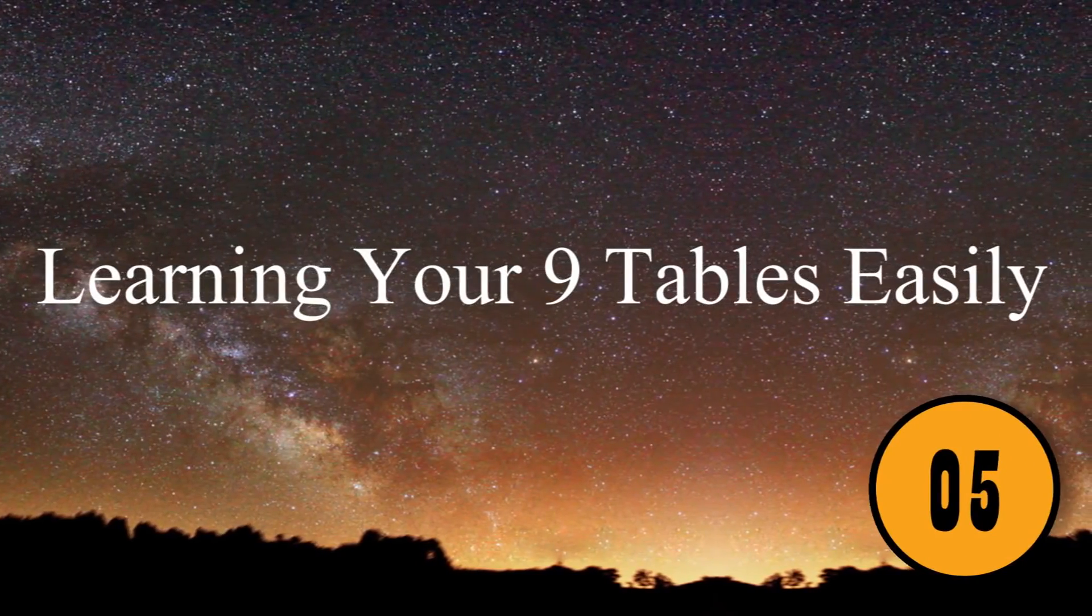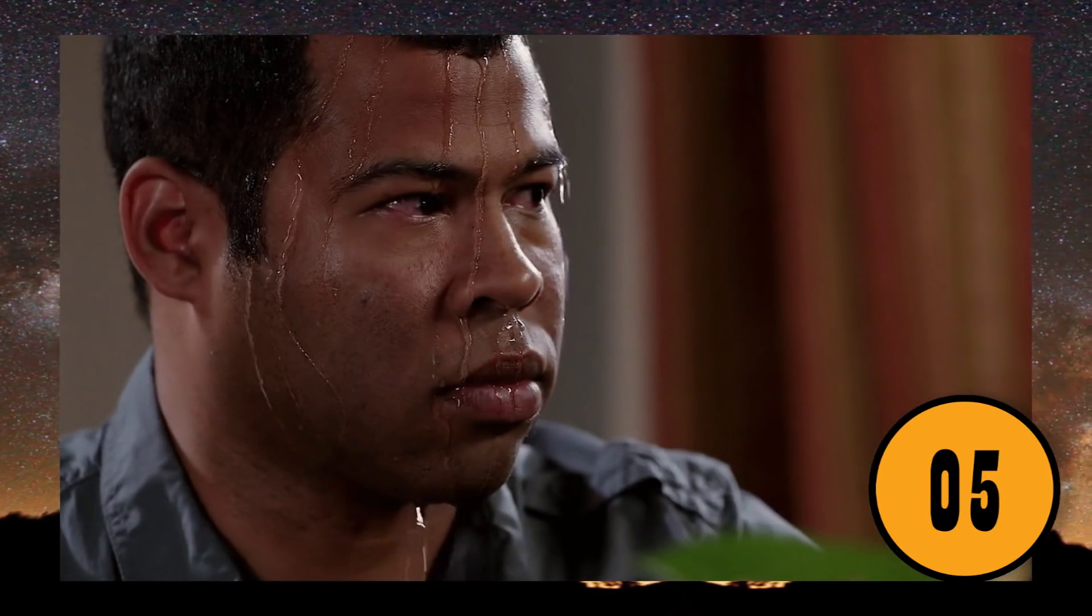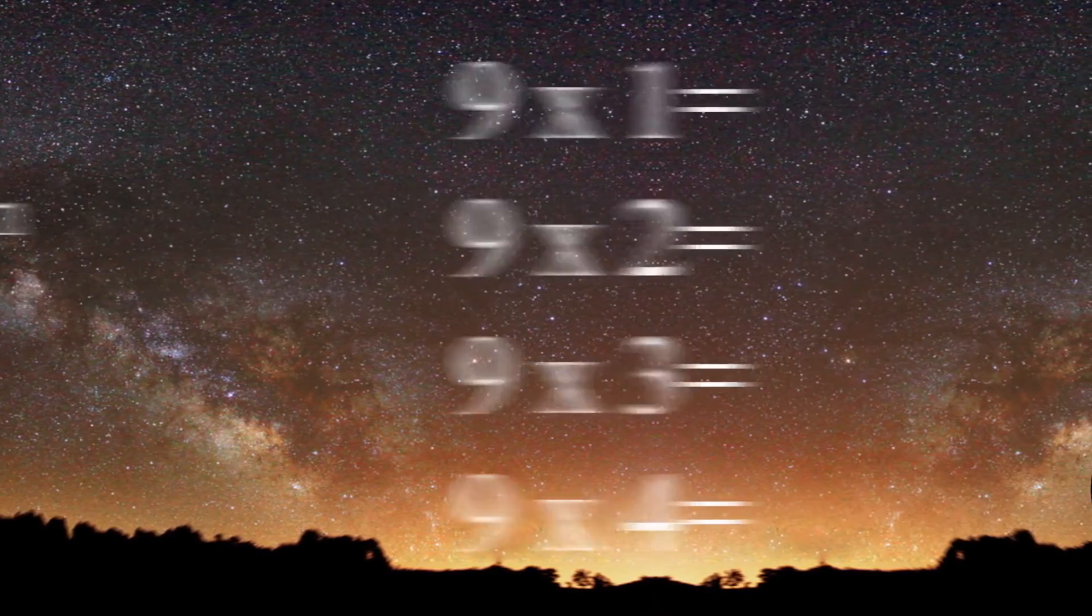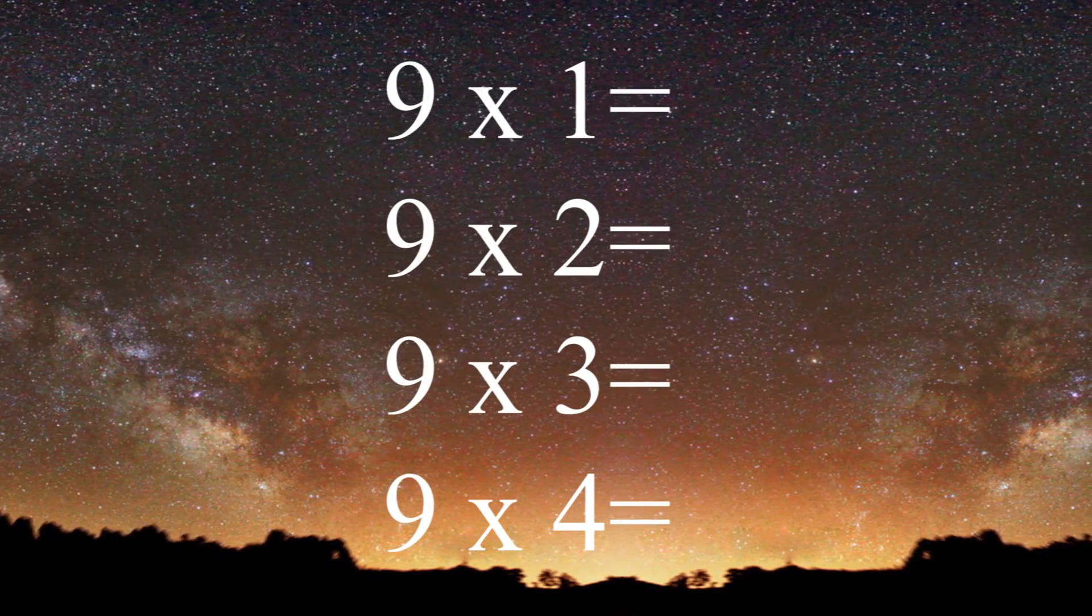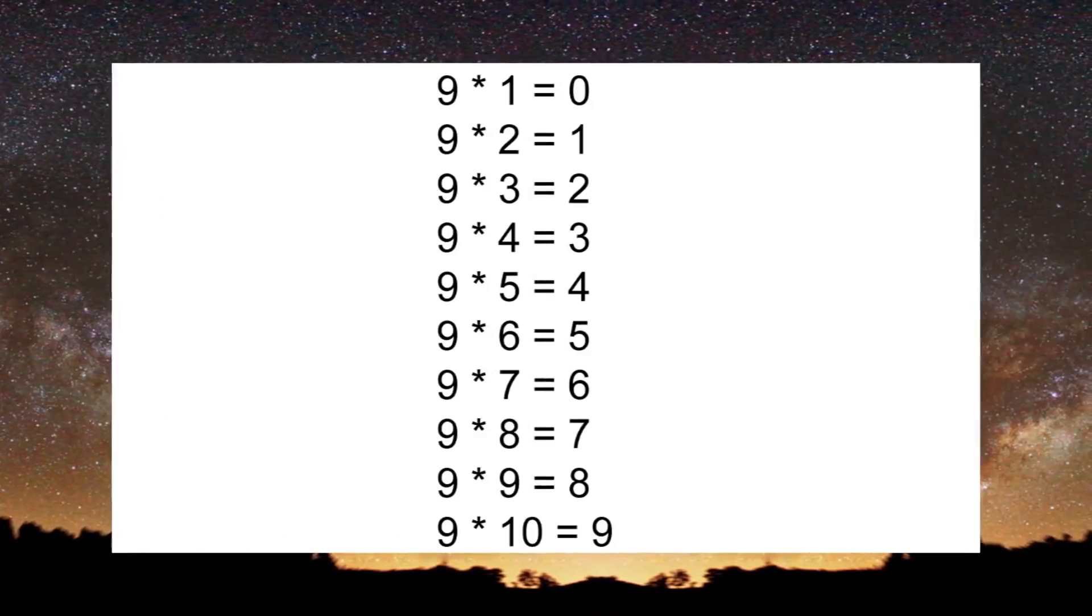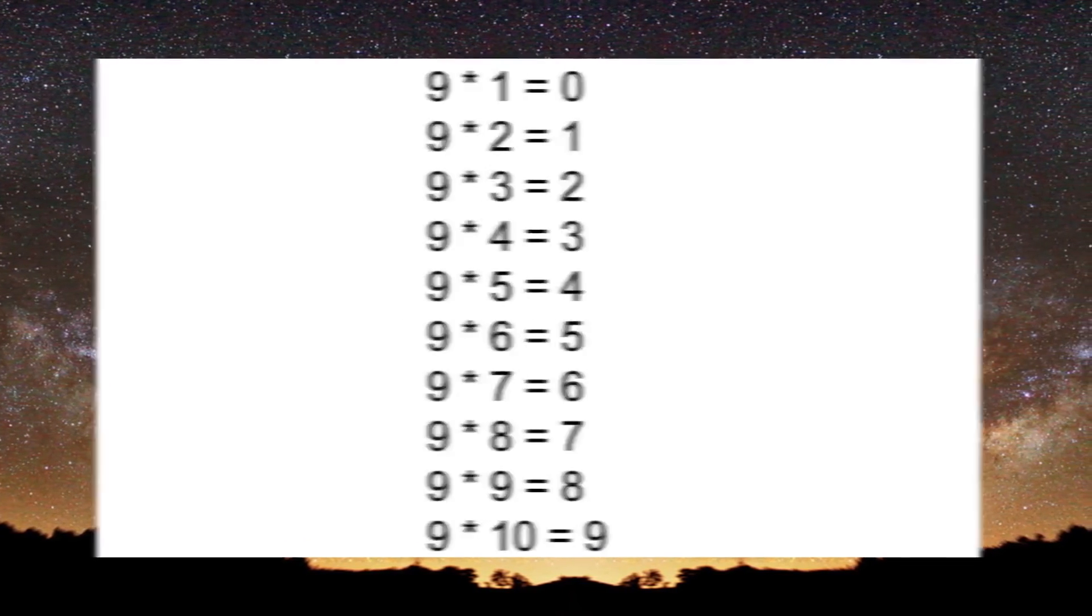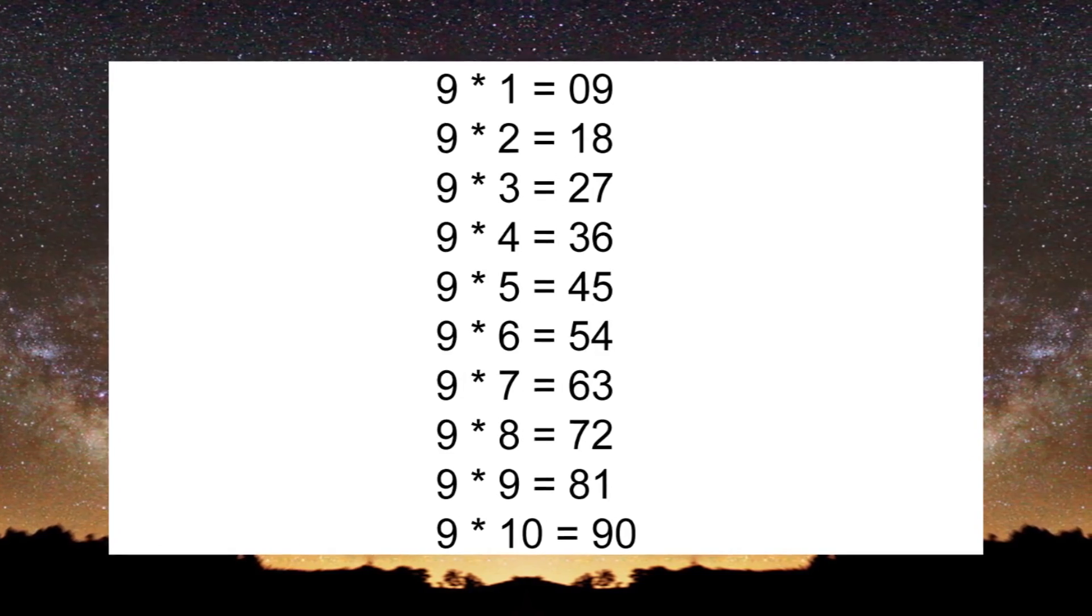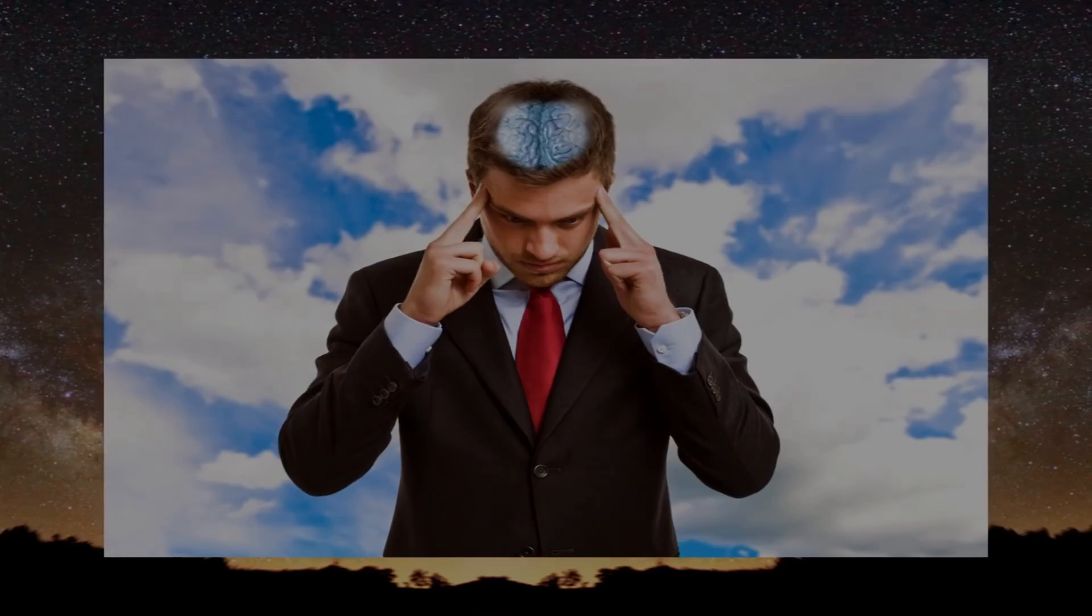Learning Your 9 Tables Easily. Your 9 Tables don't need to be as hard as you might think. Start by writing the multiplication problems in a row. For example, 9 times 1 equals, 9 times 2 equals, 9 times 3 equals, 9 times 4 equals, and so on. Next, write the numbers 0 through 9 going down, next to each problem. Next to those numbers, write the numbers going backward, 9 through 0. It will fill in all of the answers for you. Eventually, you should memorize the 9 tables, but for now, this little trick works great.